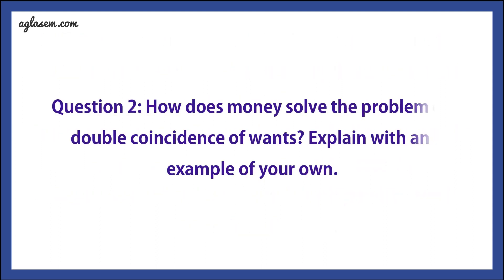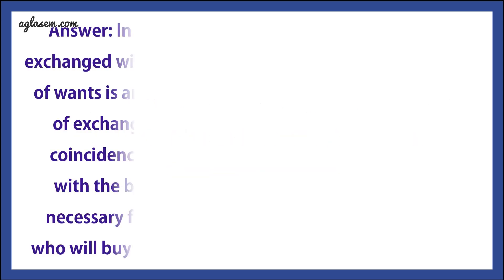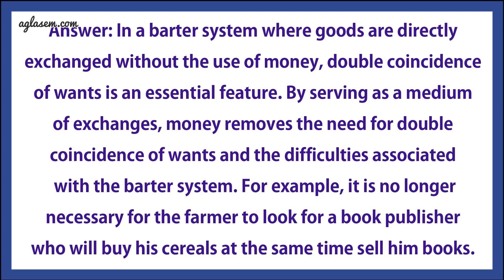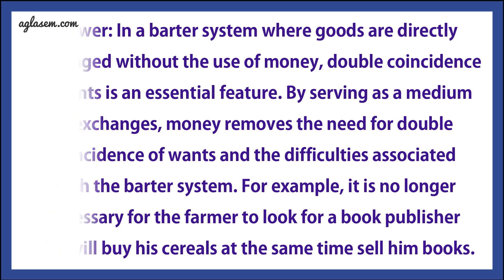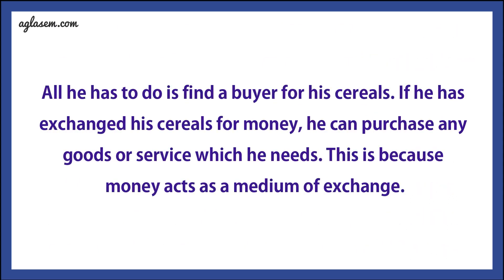Question 2: How does money solve the problem of double coincidence of wants? Answer: In a barter system where goods are directly exchanged without the use of money, double coincidence of wants is an essential feature. By serving as a medium of exchange, money removes the need for double coincidence of wants and the difficulties associated with the barter system. For example, it is no longer necessary for the farmer to look for a book publisher who will buy the cereals and at the same time sell him books.